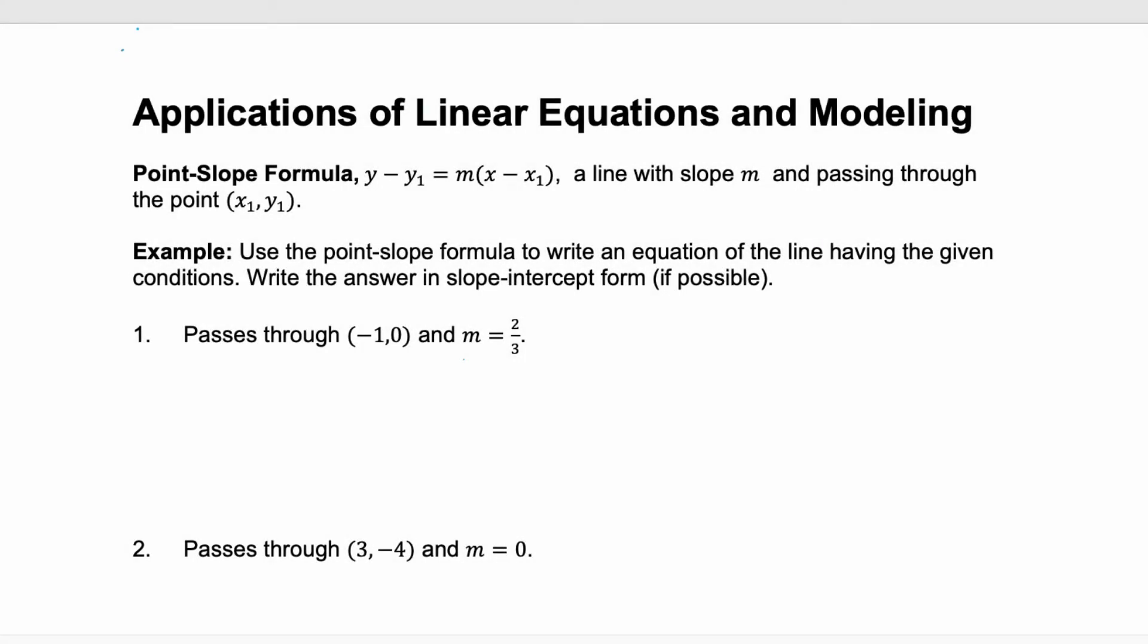You may have seen a linear equation written as y equals mx plus b format. That's called slope-intercept form. Today we're going to learn about point-slope form, which is written y minus y1 equals m times x minus x1. It's a line with slope m and it passes through the point x1, y1. For the next two examples we're going to use point-slope formula to write an equation of the line having the given conditions and then we're going to put it into slope-intercept form if possible.